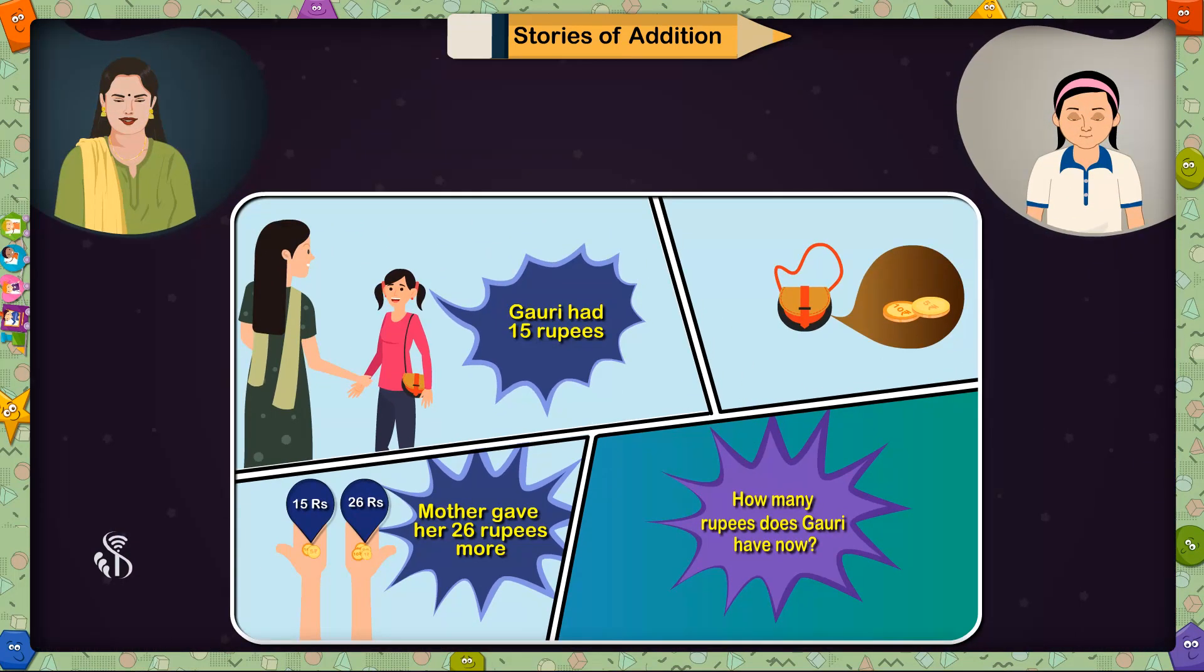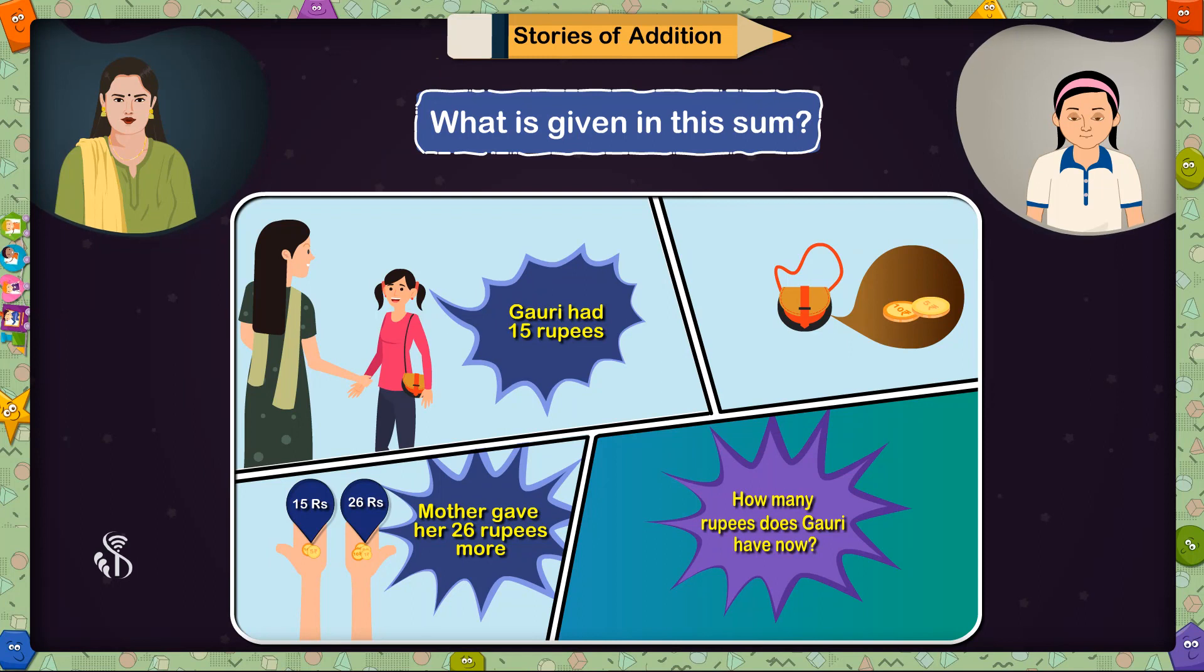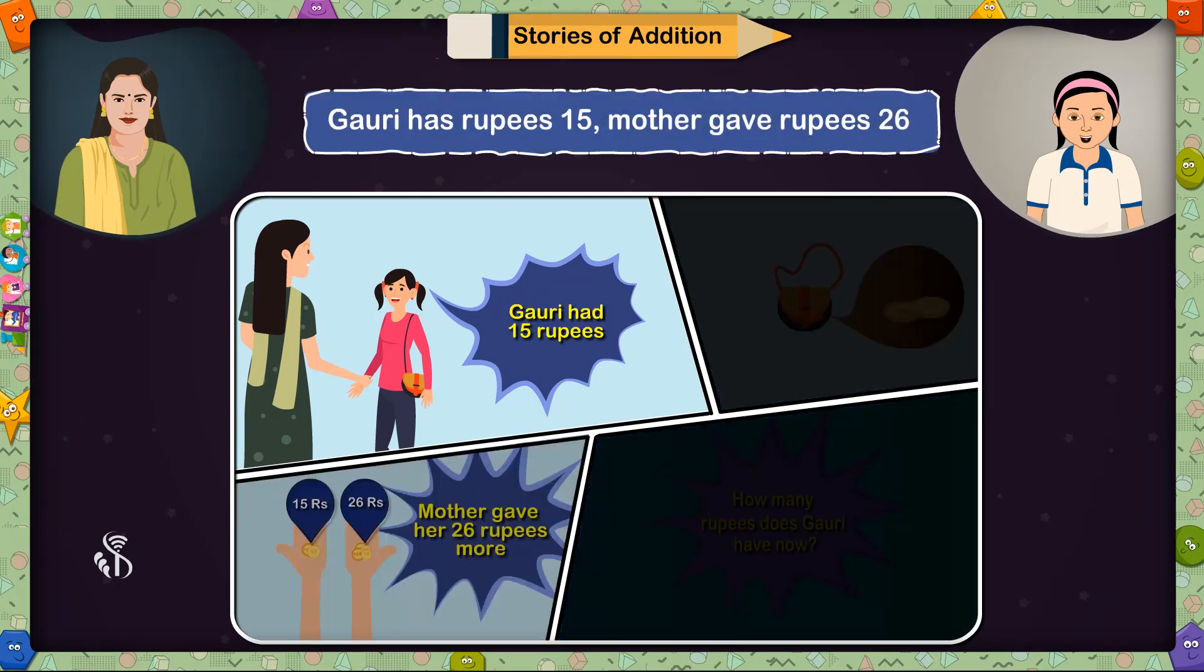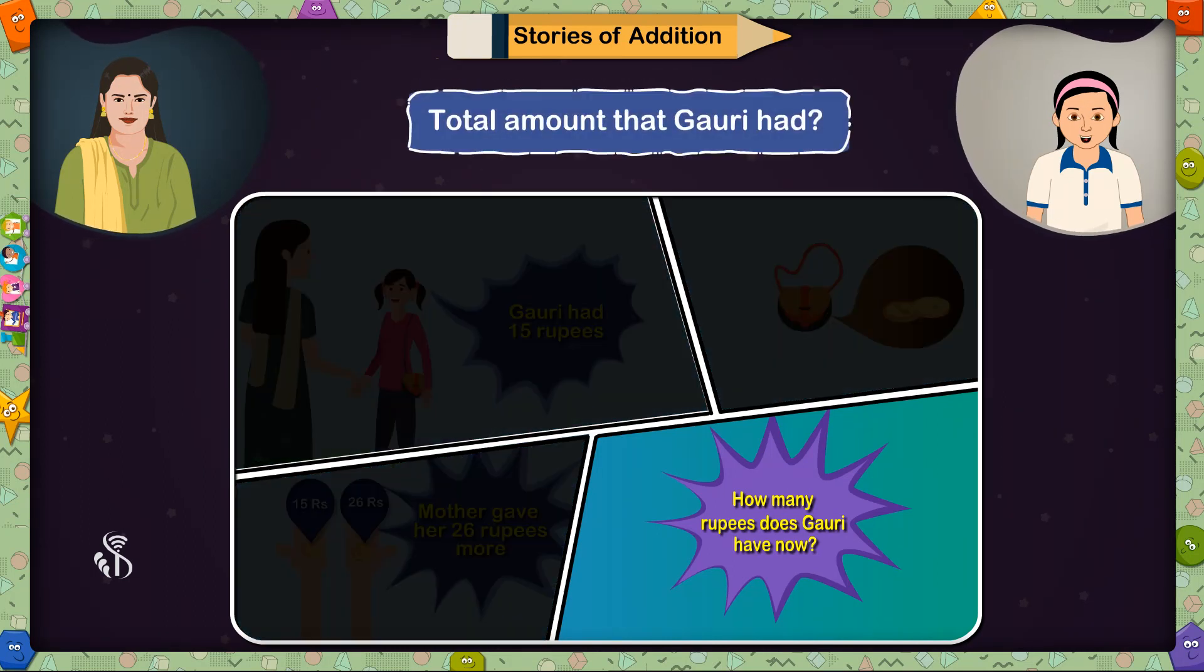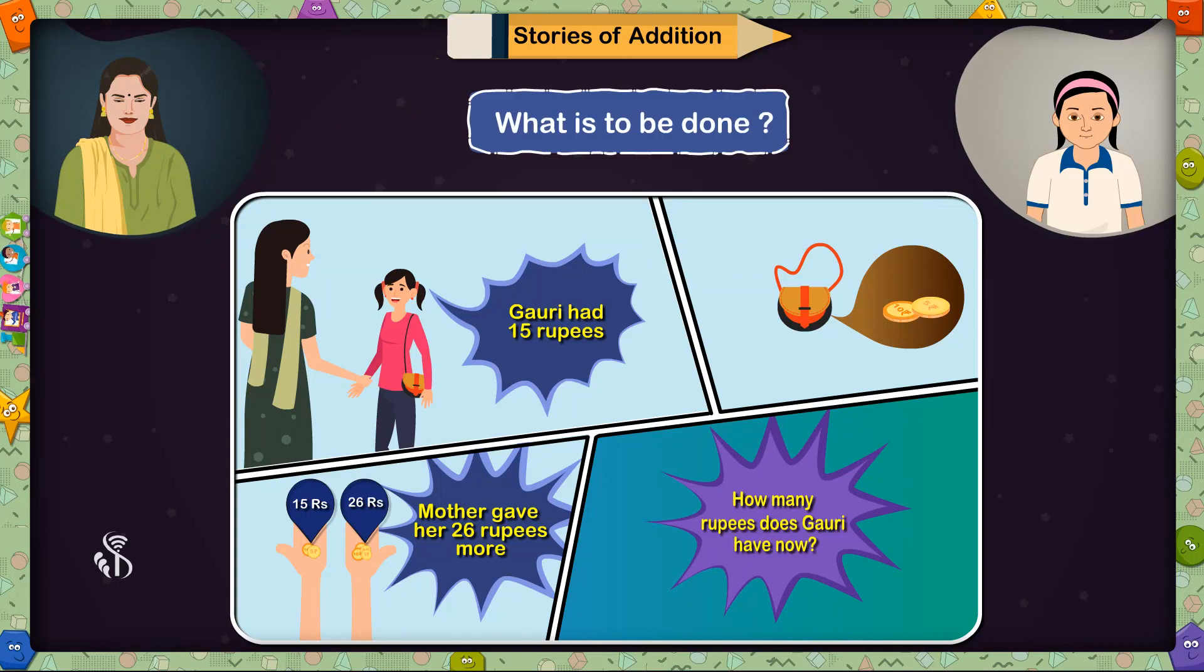Children, tell me what is given in this example. Gauri has rupees 15, mother gave her rupees 26. That's right. What is asked here? Total amount that Gauri had. So what is to be done here?